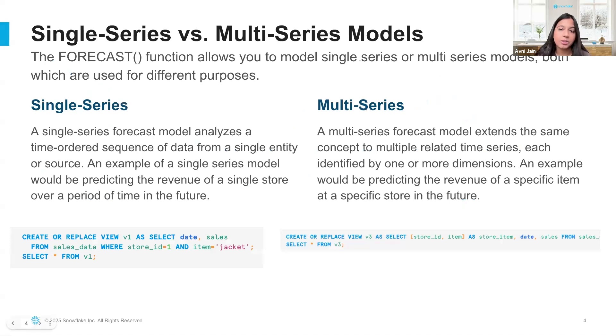The main difference between a single series and a multi-series forecast model is that a single series model analyzes the time series data from a single source, whereas a multi-series model extends the same concept to multiple dimensions. An example of a single series model would be predicting the revenue of a single store over a short period of time, whereas with a multi-series model it would be predicting the revenue of a specific item at that specific store in the future.